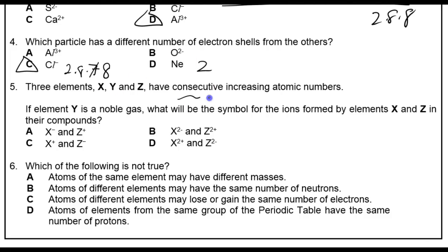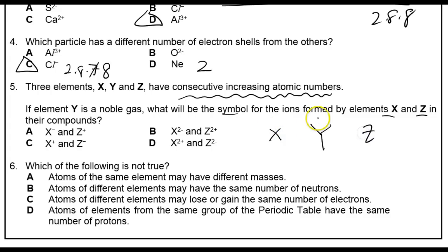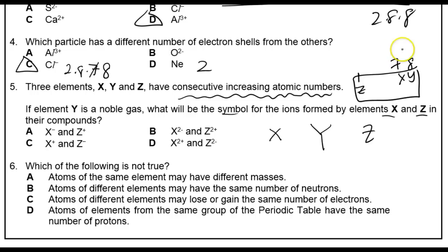Question 5: elements X, Y, Z have consecutive increasing atomic numbers. If element Y is a noble gas, Y would be at the end of a row in the periodic table. X would be the element just before Y — with 7 valence electrons — and Z would be the next element after Y with 1 valence electron. So X would prefer to gain 1 electron to form X⁻, and Z would prefer to lose 1 electron to form Z⁺. The answer is A: X⁻ and Z⁺.